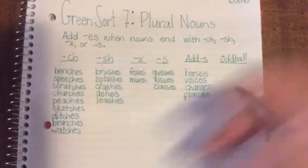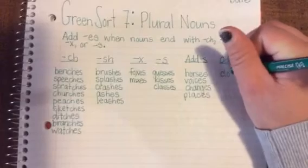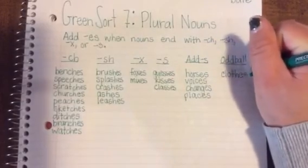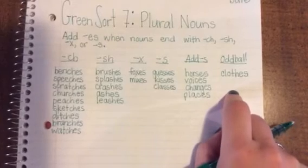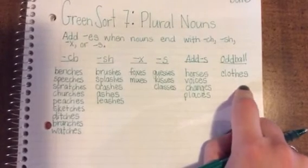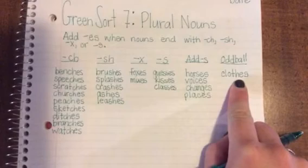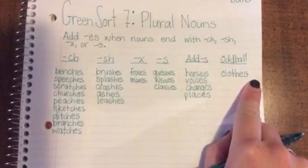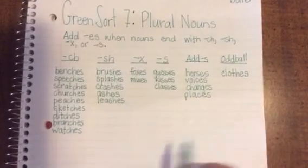Okay, ready for our oddball? If you haven't already guessed, our oddball is clothes. So clothes, like what you wear, ends with the ES, but we don't say is. We don't say clothes-is. It just comes off as the Z sound, clothes.